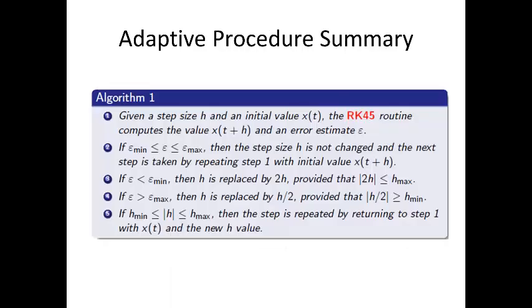So, here's the adaptive procedure summary, and it's listed as an algorithm. We begin by running the RK45 routine in step one. Next, step two indicates that if the error estimate is inside the bounds, we don't change anything. Step three says that if the error estimate is less than the lower bound, go with the larger step size. Step four says that if the error estimate is greater than the maximum bound, go with the smaller step size. Finally, step five checks to make sure the step size is kept within the appropriate bounds. Having our algorithm, let's put together the pseudocode.